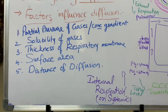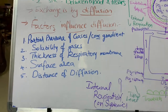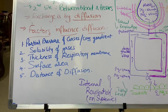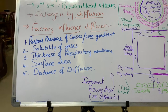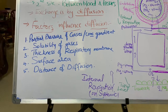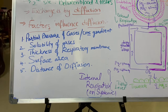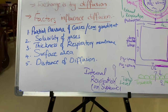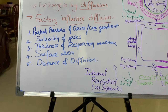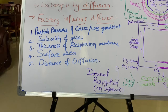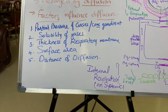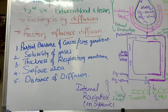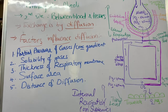The factors which influence diffusion of respiratory gases are: first, partial pressure or concentration gradient; second, solubility of the gases; third, thickness of the respiratory membrane; fourth, surface area; and fifth, distance of diffusion. We will discuss each factor in detail.